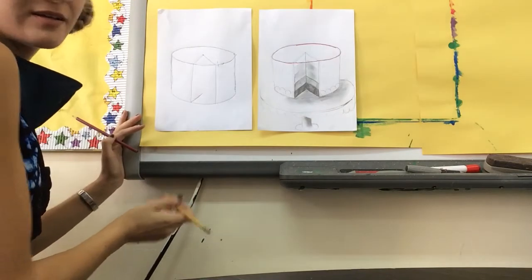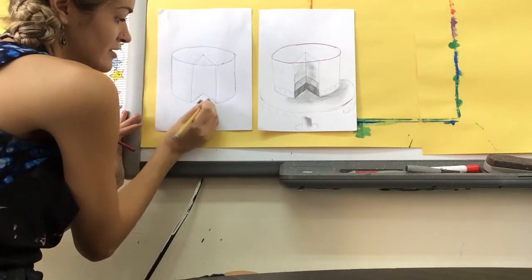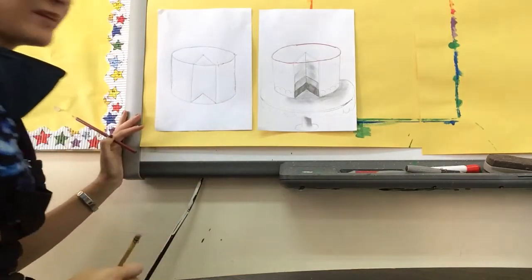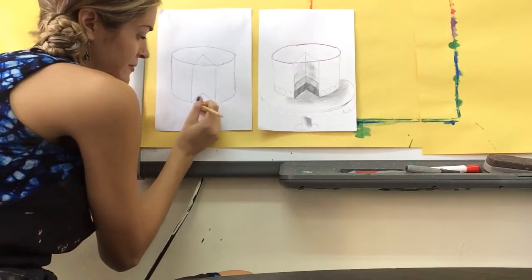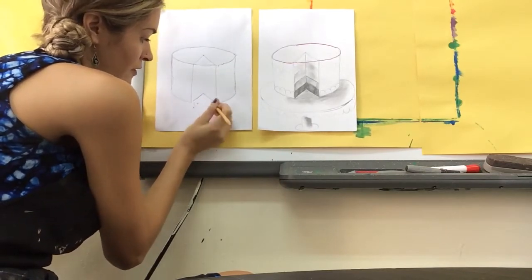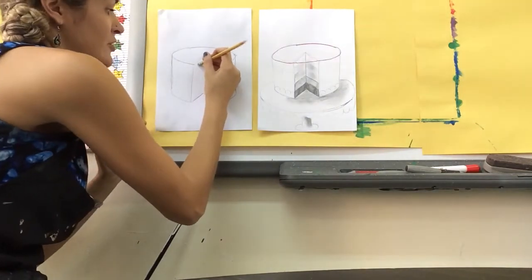Now I can erase out this curved line here, and I can erase out this curved line.